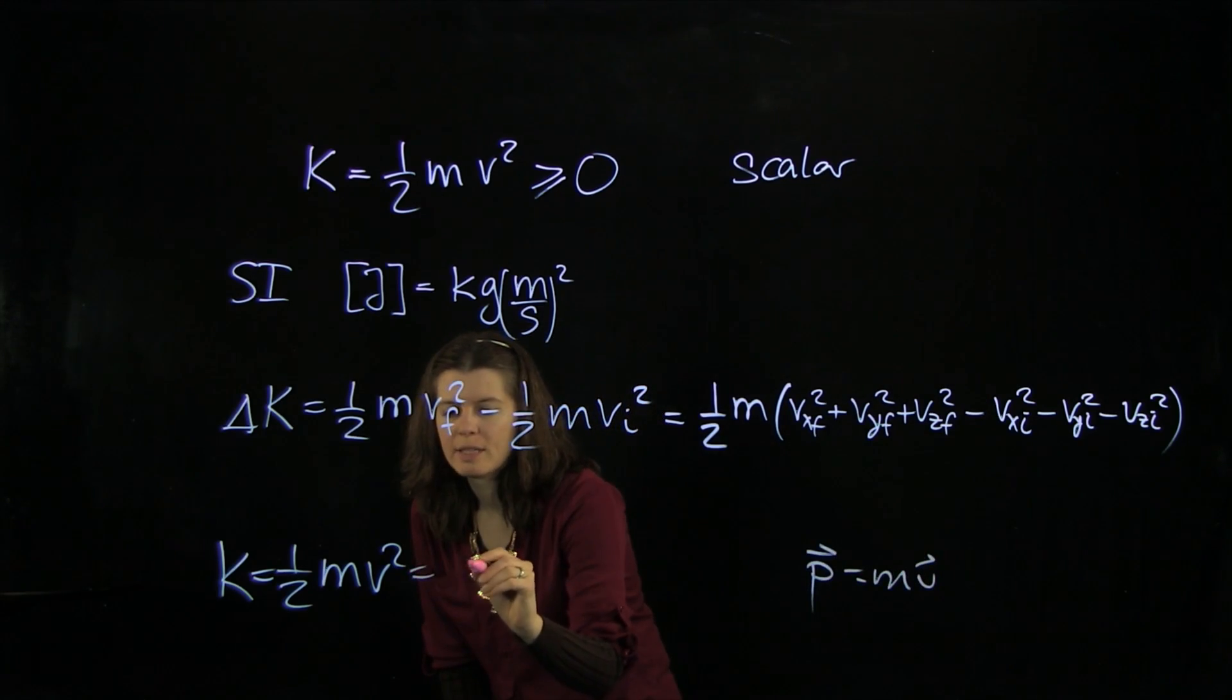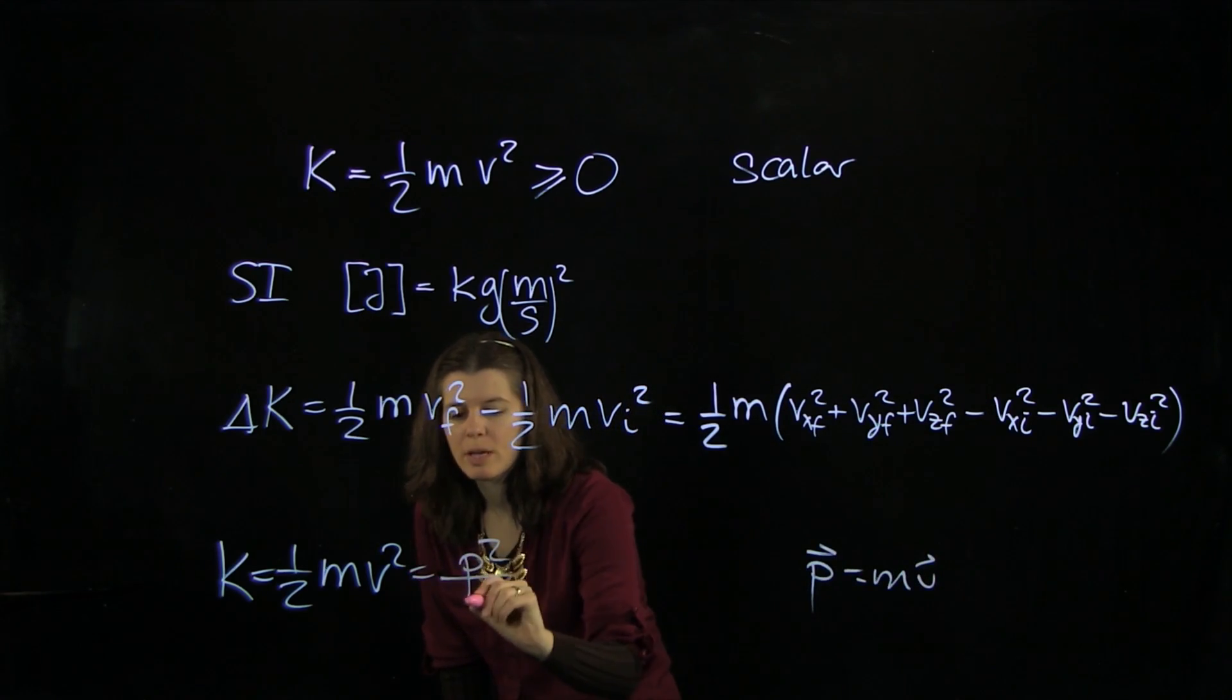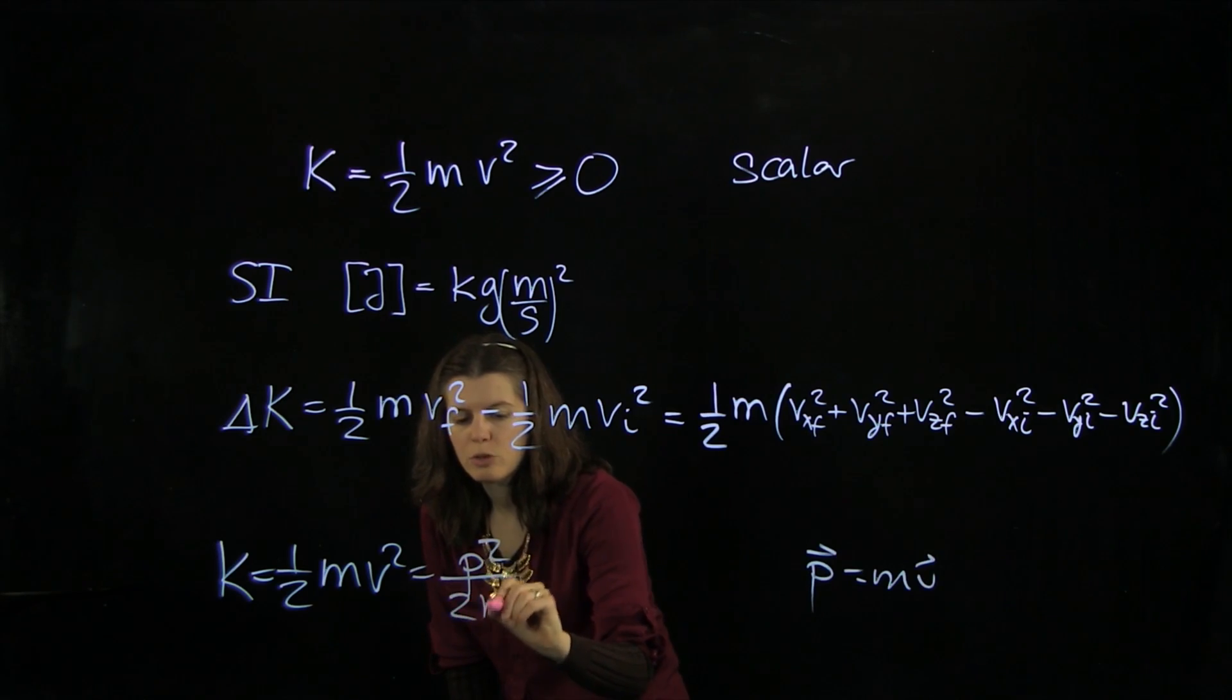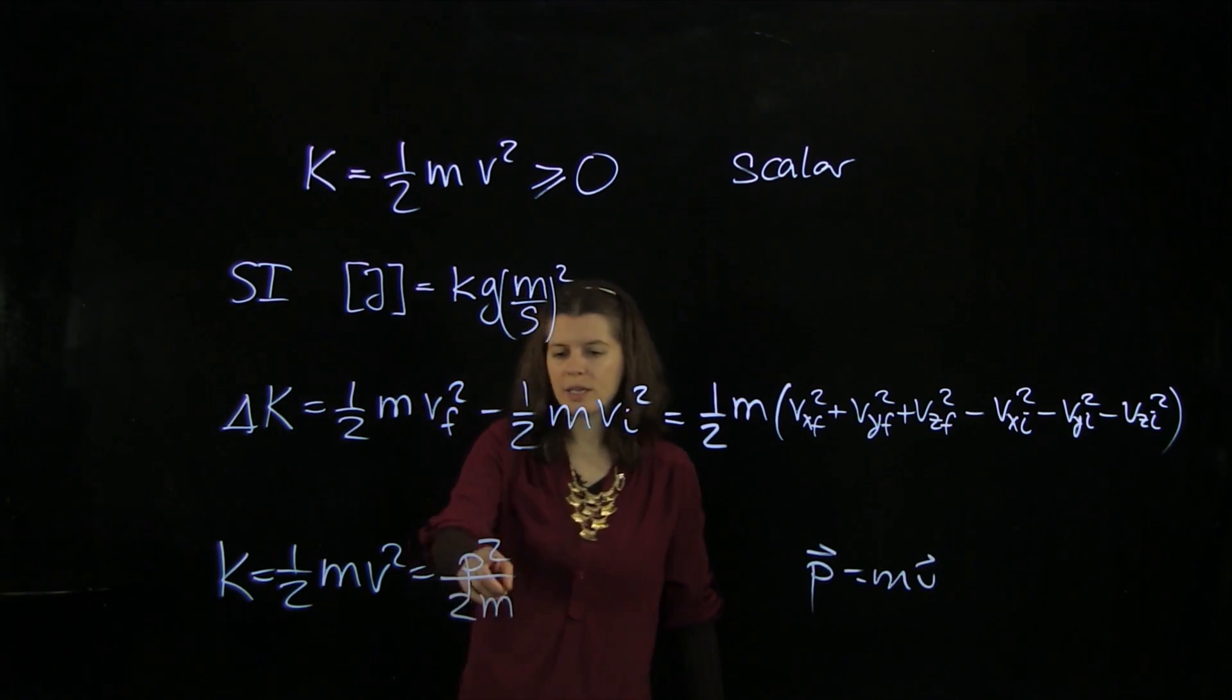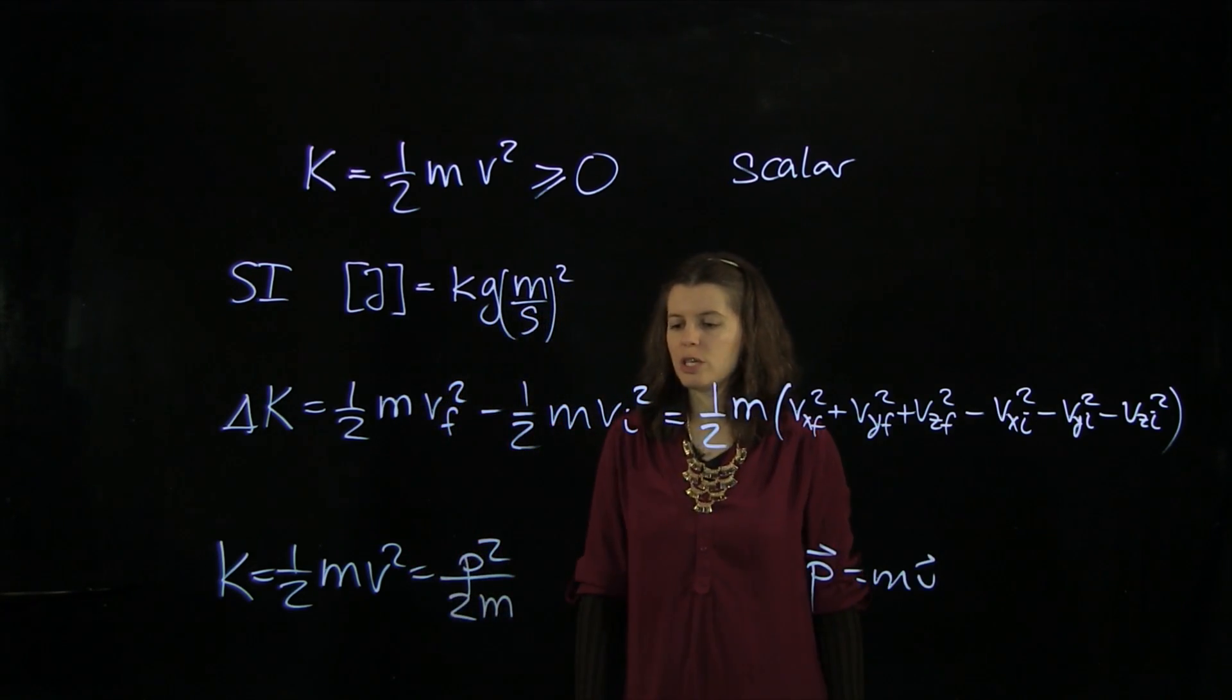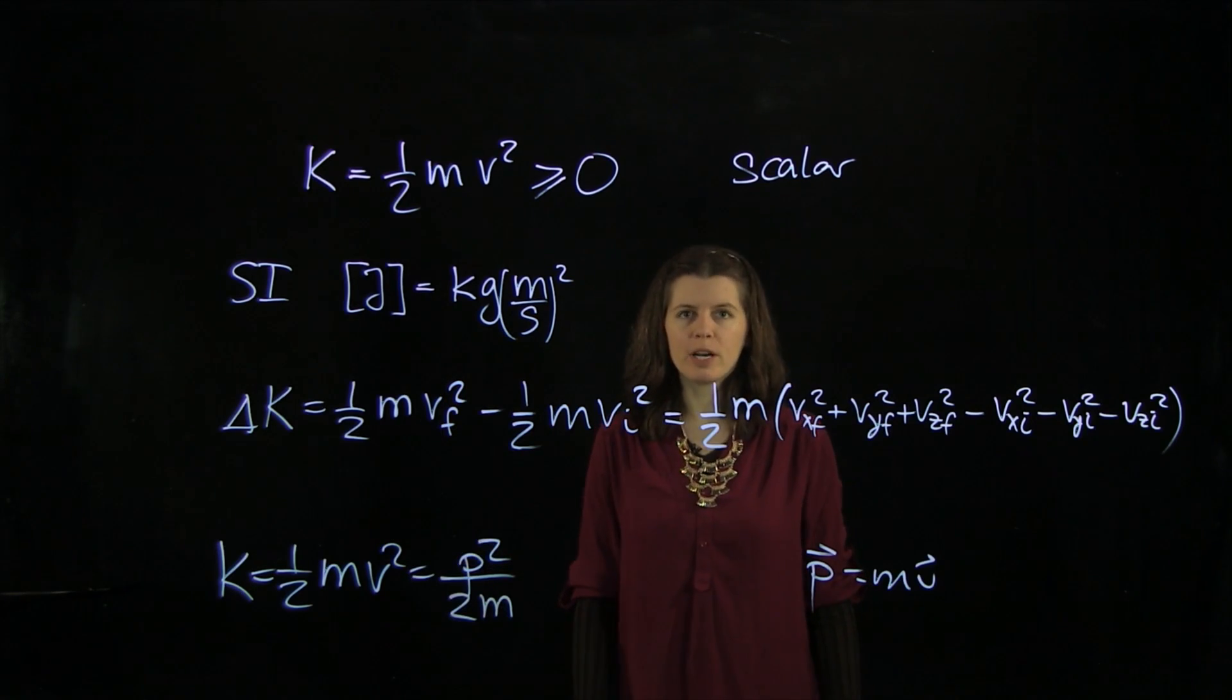And so we're going to get that this actually can be expressed as p² over 2m. And so that is the kinetic energy expressed in terms of the momentum of a particle.